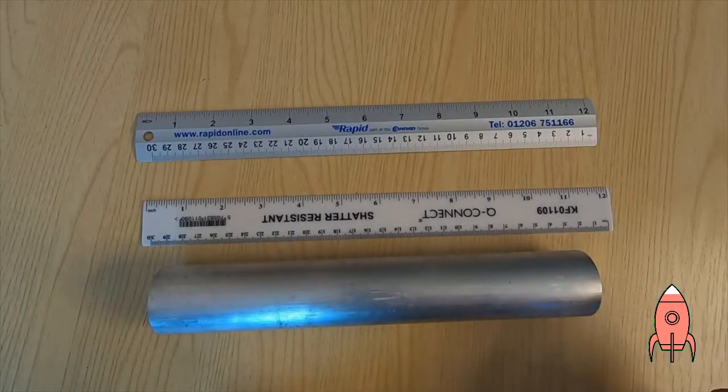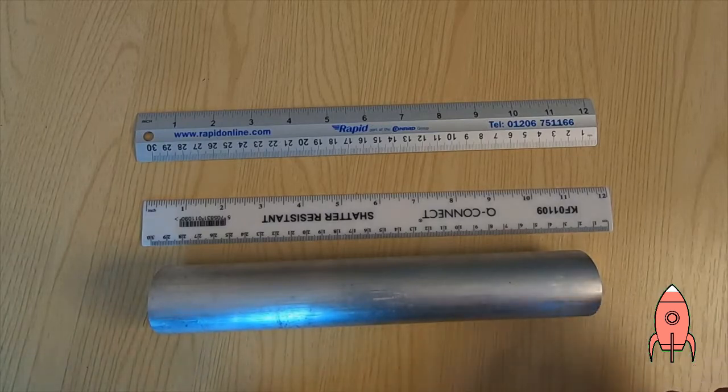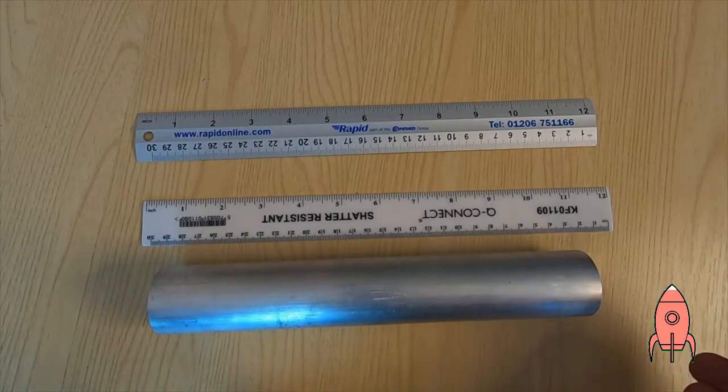By comparing the flexibility of the ruler against the rod of material, you can see that the thickness or design of that material changes its mechanical properties.